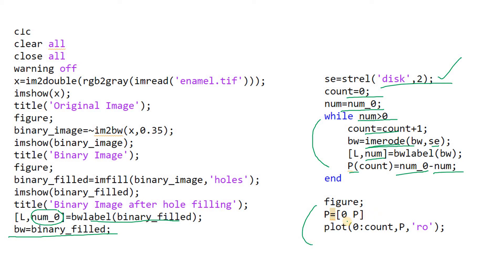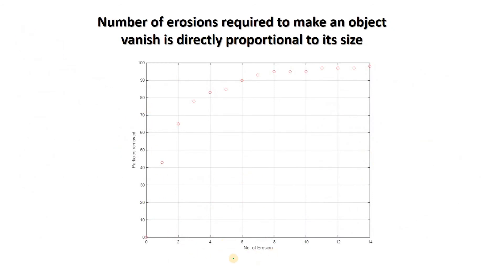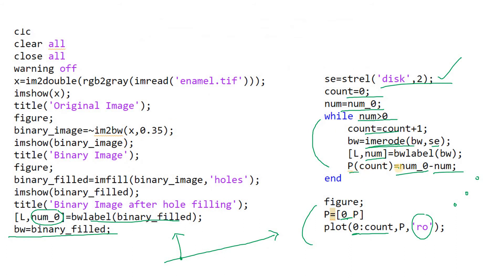For plotting, we append zero at the front of p — because at the 0th instance when no erosion is applied, no object is removed. We plot from 0 to count on the x-axis against p, using line style 'ro' which gives red circular markers. This discrete distribution shows: x-axis is the number of erosions, y-axis is the number of objects removed cumulatively. This p vector is a function of count, which indicates how many times we are applying this erosion.